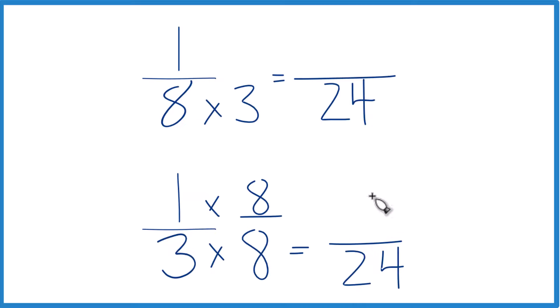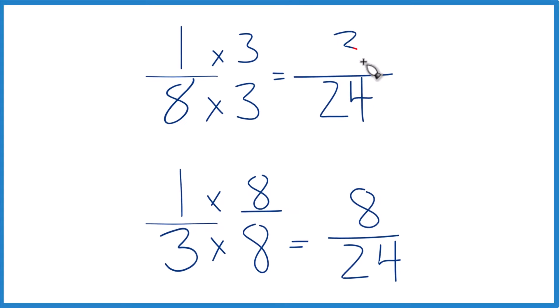1 times 8, that's 8. And 8 24ths, that's an equivalent fraction. It's the same as 1 third, same value. Up here, we're going to multiply by 3, so we get 3 24ths.